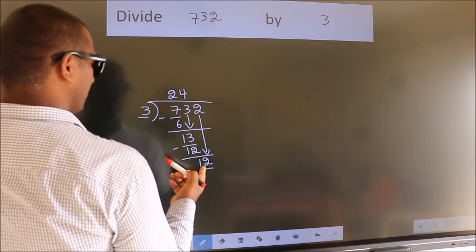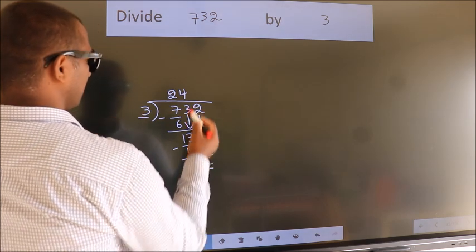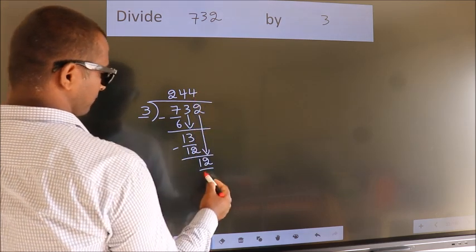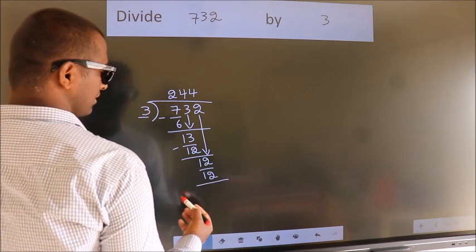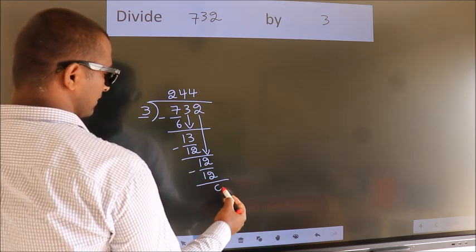When do we get 12? In 3 table. 3 4's 12. Now we subtract. We get 0.